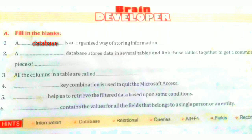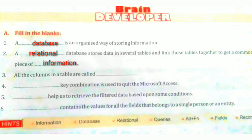Second question: a dash database stores data in several tables and links those tables together to get a common piece of dash. As we know, a relational database stores information in different tables and links them together to get a common piece of information. If we need one piece of information, we look across all the linked tables.